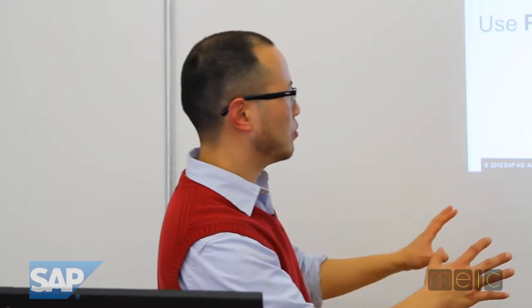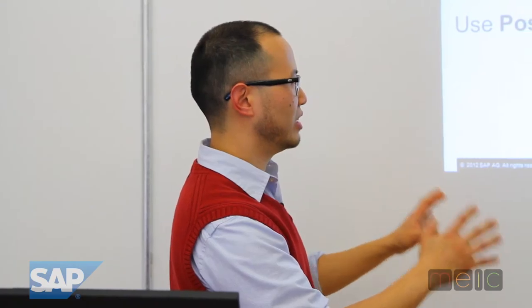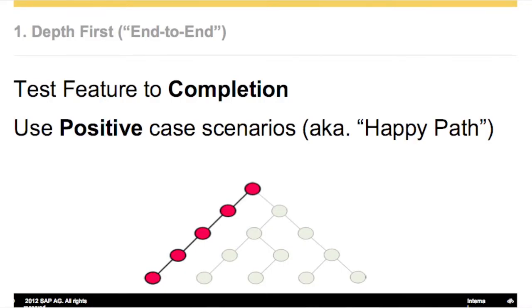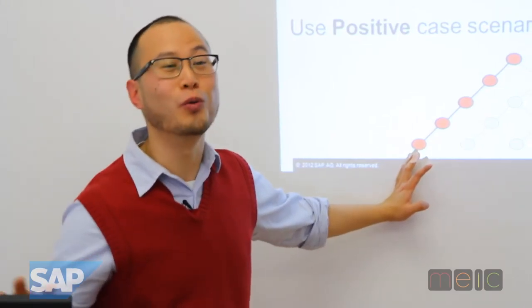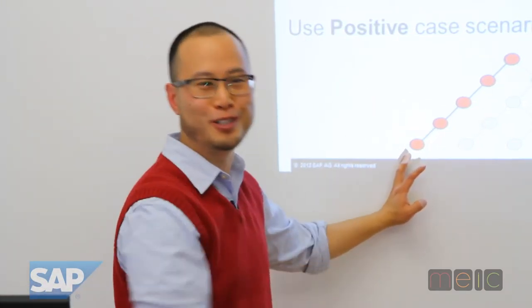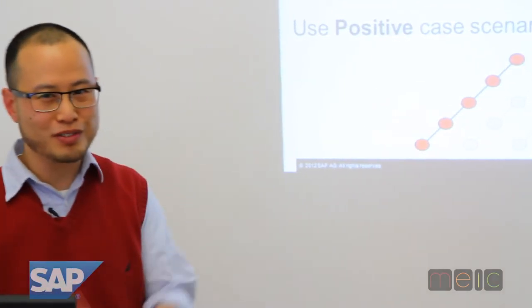So what does that mean? The first time we're going to use this positive case scenario. The happy path is the technical term that testers love to use, but the idea is this is that case where everything goes right. Let's test that it works because usually if this doesn't work, there's not much other stuff that will work. So this is probably where you want to start. Usually this is the place you start.